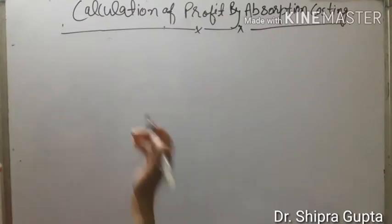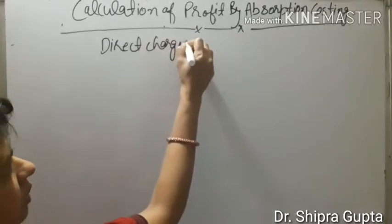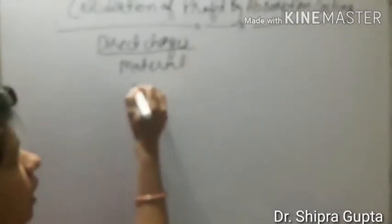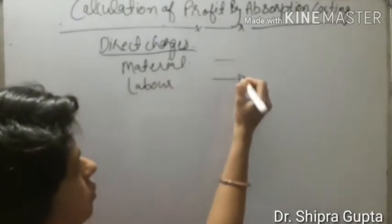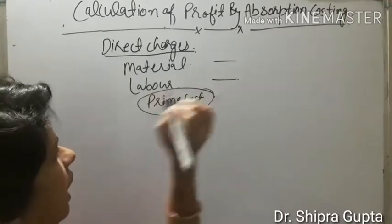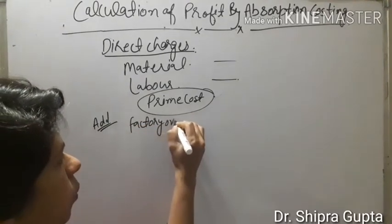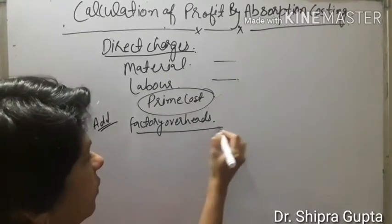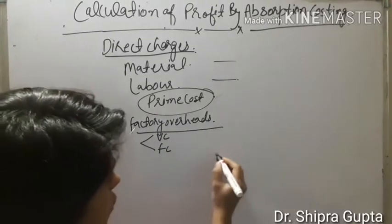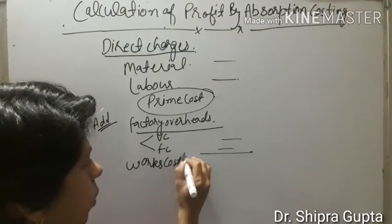This is just like a cost sheet. First we take direct charges — material and labor — and these two items together are known as prime cost. Then we add factory overheads, divided into variable cost and fixed cost. The total of prime cost plus factory overheads is known as works cost or factory cost.